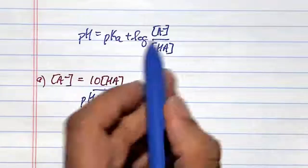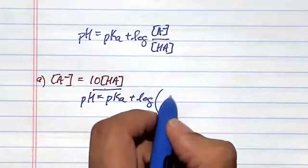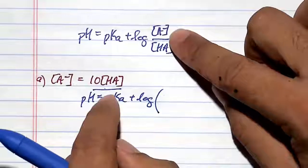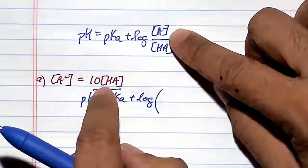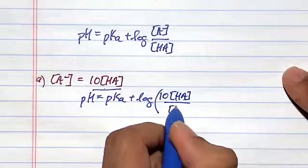I'll substitute, instead of A-, I'll substitute 10 times HA. And HA is just going to still be HA.